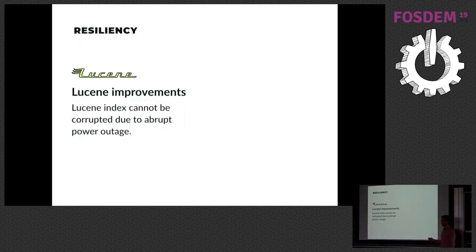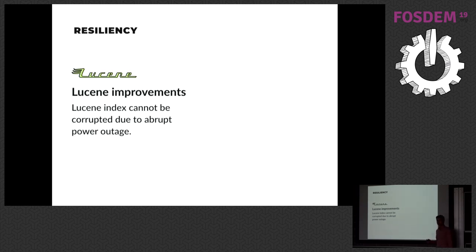Resiliency also improved. In Lucene 3, if your machine lost power while indexing, you could end up with a corrupted index — and for our biggest customers, re-indexing could mean a week of JIRA downtime. JIRA 7 and now JIRA 8 no longer have this problem. There's a funny story: Mike McCandles was testing that the new Lucene couldn't be corrupted — he set up two machines where one controlled the power outlet of the other, indexing something and pulling the plug repeatedly to confirm the index remained intact. This is the kind of thing you get for free when you update libraries.